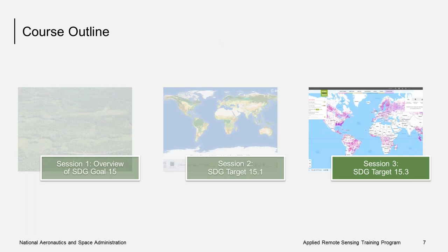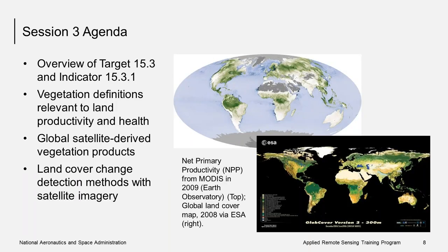Here's an overview of the course agenda. In Session 1, we had an overview of SDG Goal 15. In Session 2 yesterday, we discussed SDG Target 15.1 and Indicator 15.1.1. Today, in Session 3, we will discuss SDG Target 15.3 and Indicator 15.3.1. In addition to discussing the targets and indicators, we will give some basic definitions relevant to land productivity and health, discuss global satellite-derived vegetation products related to land degradation, and discuss land cover change detection methods using satellite imagery. I will start with an overview of Target 15.3.